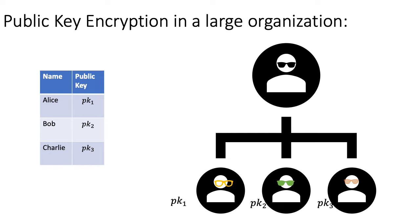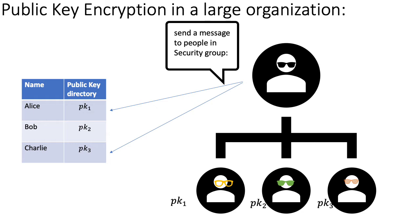Consider we want to do public encryption in a large organization where everyone can send a secret message to another person by encrypting the message with respect to that person's public key. A naive way to realize this is just let everyone publish their public key in a directory. However, this approach may be very inefficient when we want to send a message to a group of people, since we need to encrypt and send a message to each of them. Suppose this group of people actually have some common features — for example, they all work in the same research group or they are all under or above some certain age. We can probably just send an encrypted message to the people with all these features that can decrypt, but others without this feature cannot.